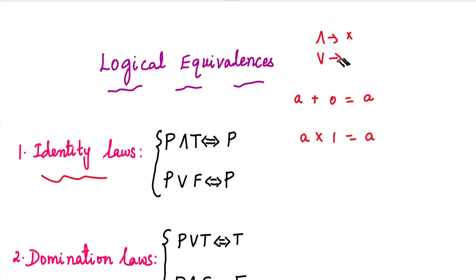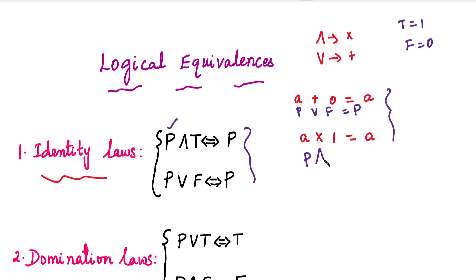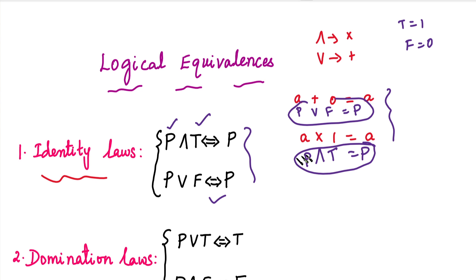In the first equation, we have a statement P with the OR symbol and 0, which is false, and that equals P. In the second equation, we have statement P with the AND symbol and 1, which is true, and that also equals P. These two are the identity laws.